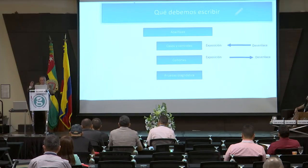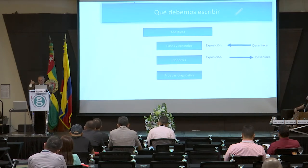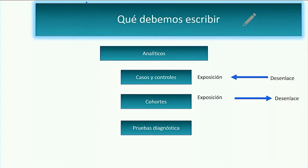Recordemos también los analíticos: tenemos comparación entre casos y controles o entre aquellos que tienen una exposición o no. Si yo tengo un desenlace cáncer gástrico y miro para atrás si tenía o no tenía Helicobacter pylori: casos y controles. Si yo tengo una exposición y miro hacia adelante: cohortes. Los de prueba diagnóstica, cuando nosotros queremos saber los valores operativos: sensibilidad, especificidad, rendimiento diagnóstico, comparado contra un patrón de oro.